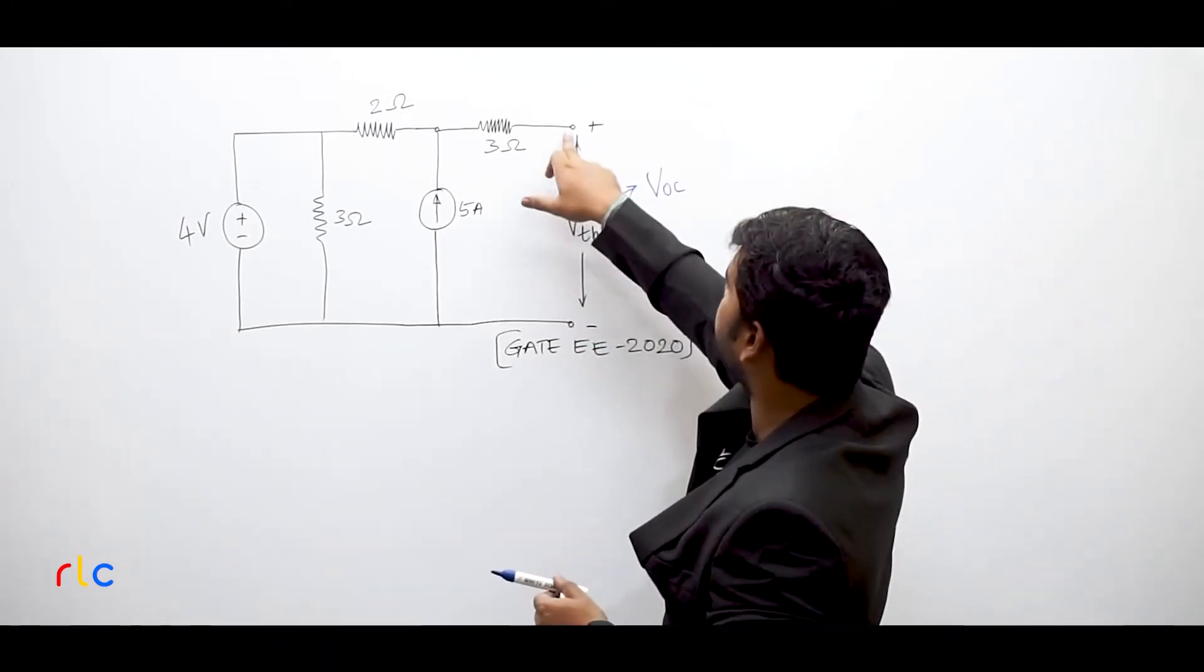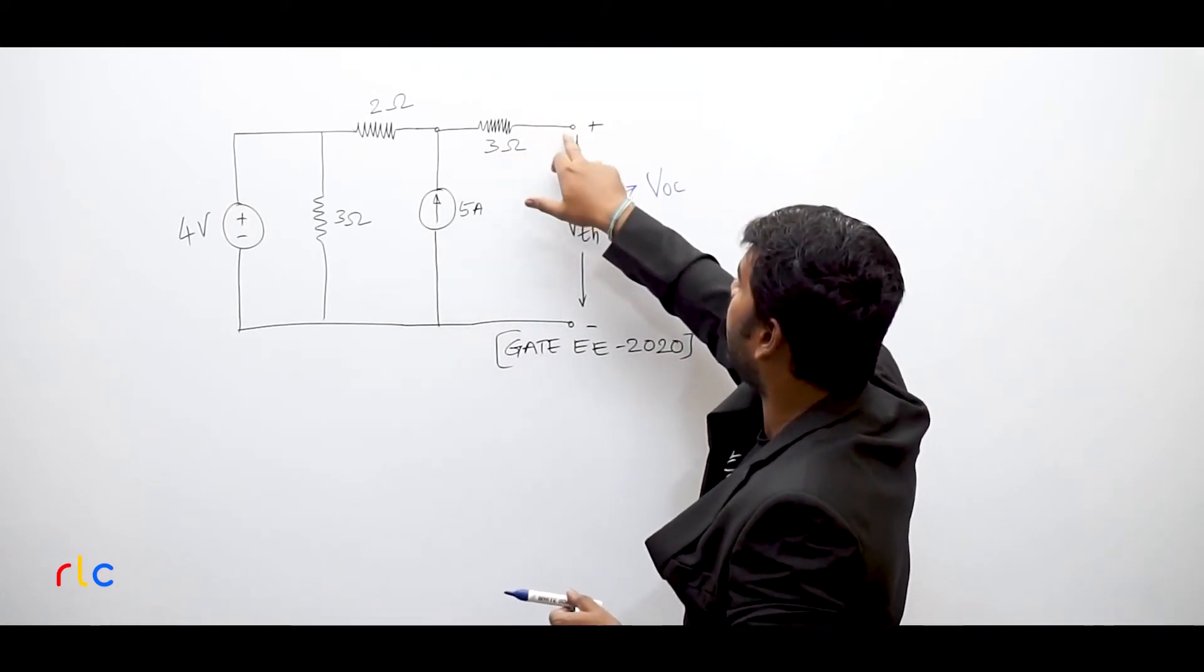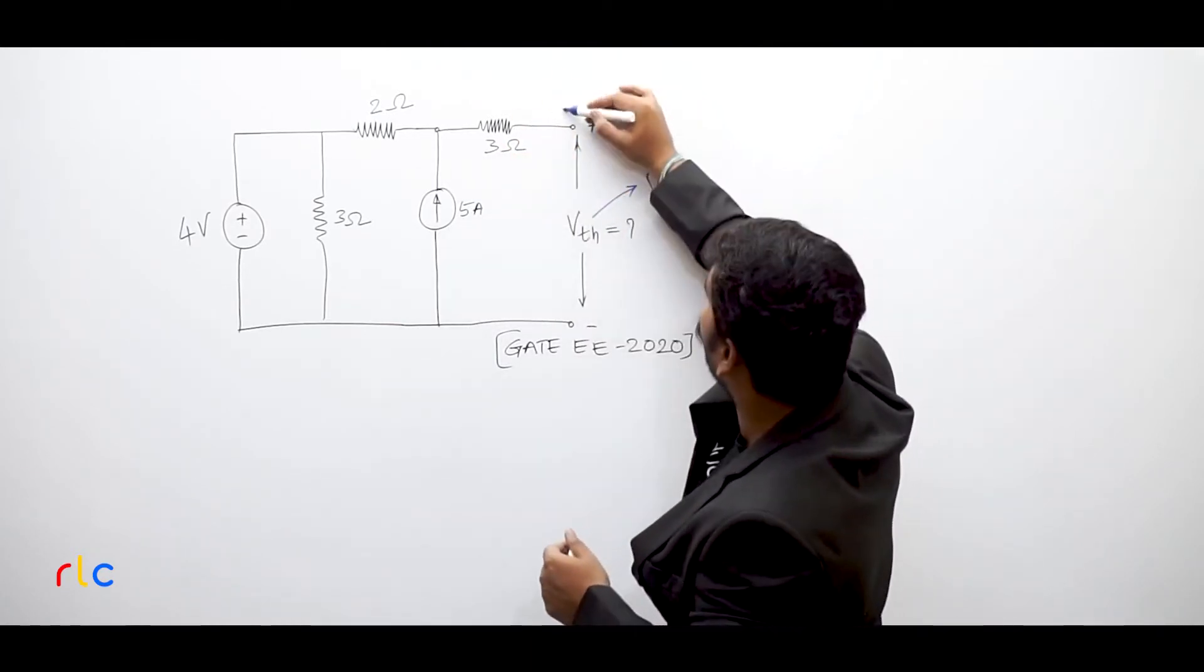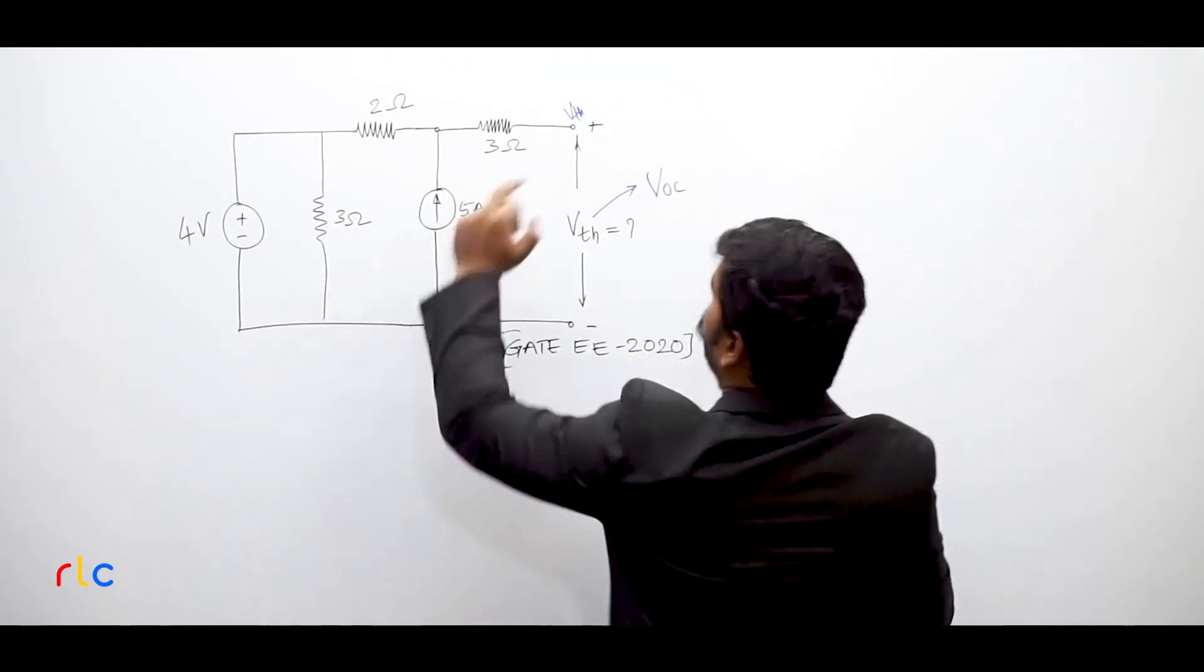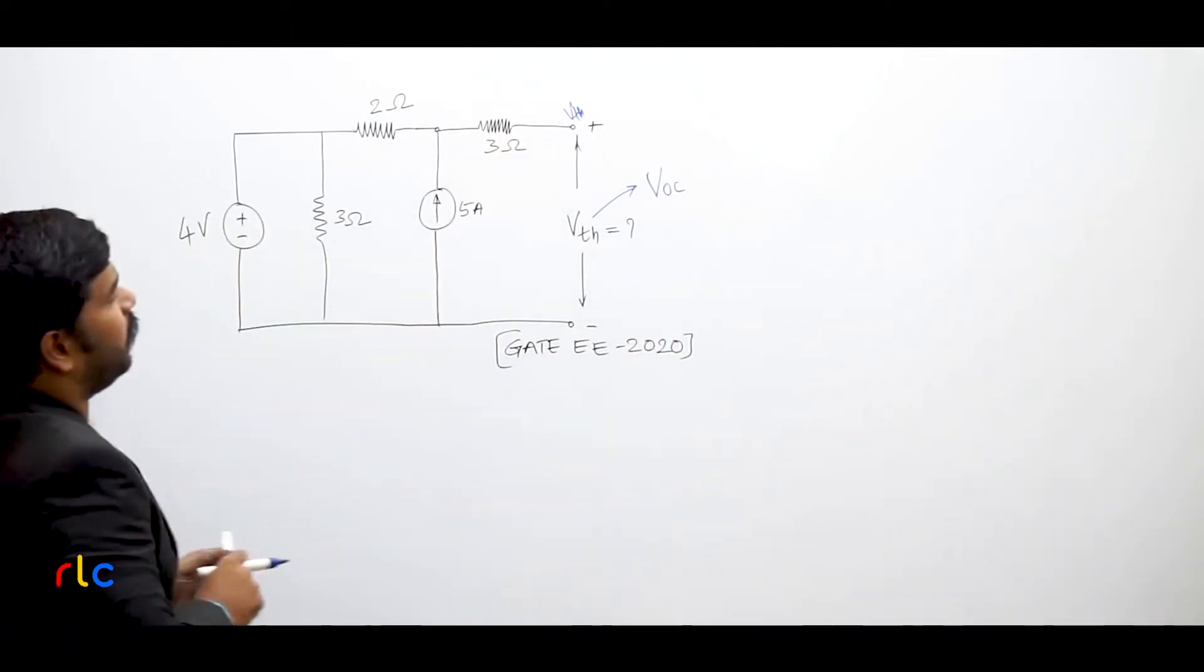Now if you look at this point, we will consider a node analysis. At this node or at this point, what is the voltage? VTH is the voltage, because this entire bottom is a reference. So automatically this will become a VTH node.